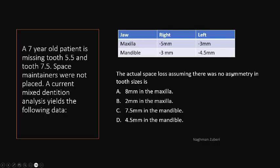So the actual space loss, assuming there was no asymmetry in tooth sizes, is 8 millimeters in the maxilla. No, 2 millimeters in the maxilla. 7.5 millimeters in the mandible, or 4.5 millimeters in the mandible.